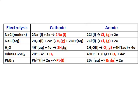This last slide gives a summary of the electrolysis of various compounds and what is formed at the cathode and anode. Molten sodium chloride gives sodium at the cathode and chlorine at the anode. Aqueous sodium chloride gives hydrogen at the cathode and chlorine at the anode. Water gives hydrogen at the cathode and oxygen at the anode. Dilute sulfuric acid gives hydrogen at the cathode and oxygen at the anode. Lead bromide gives lead at the cathode and bromine at the anode.